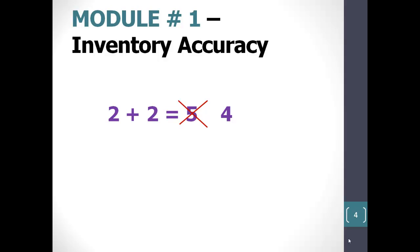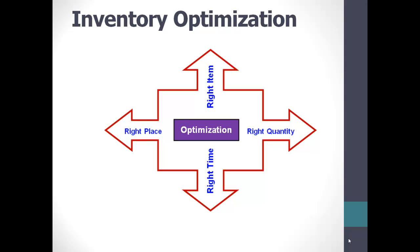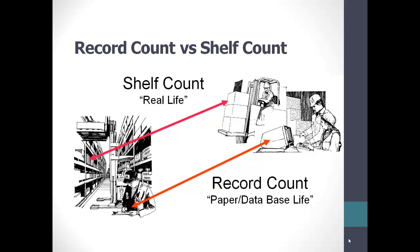Conceptually, inventory accuracy is all about achieving inventory optimization. Inventory optimization is a fancy way of saying that inventory accuracy is achieved when you do, in fact, have the right item in the right quantity, in the right place, and at the right time. You know it's achieved when an item's shelf count matches its record count. An item's record count is the amount reflected in the database, while an item's shelf count is the amount physically in the facility.